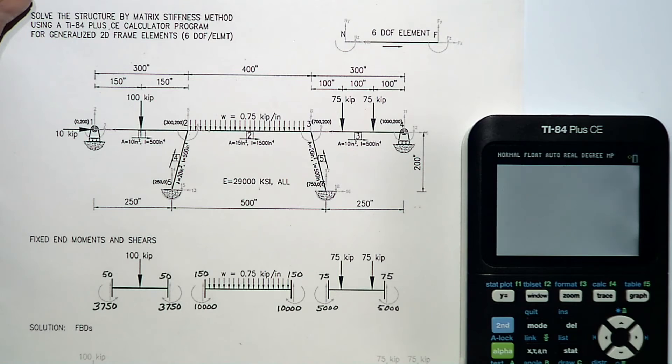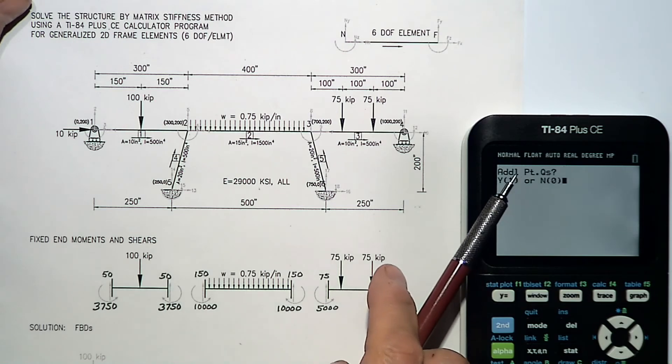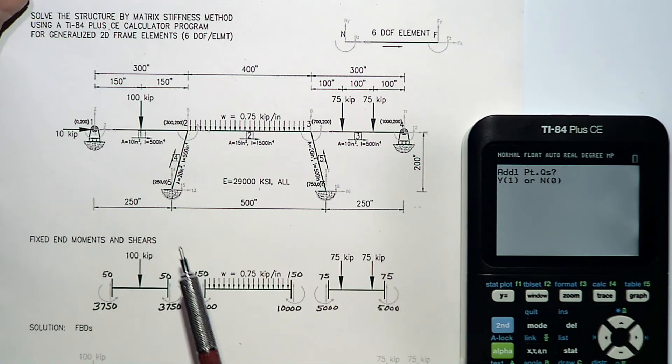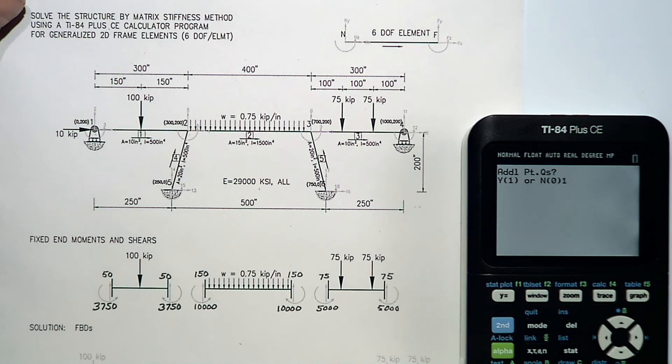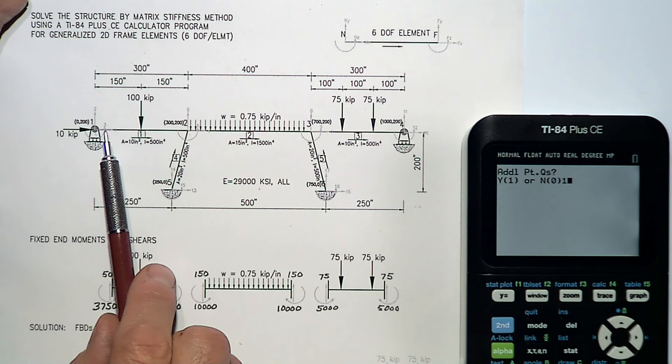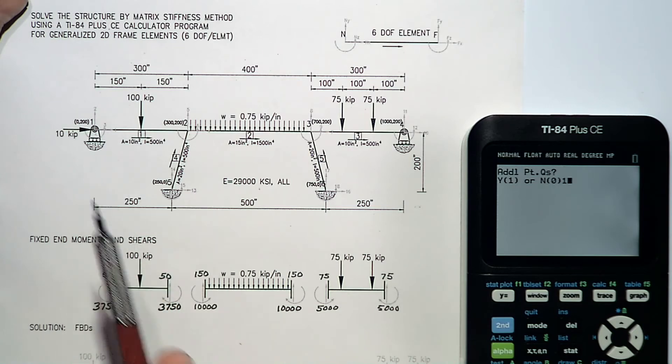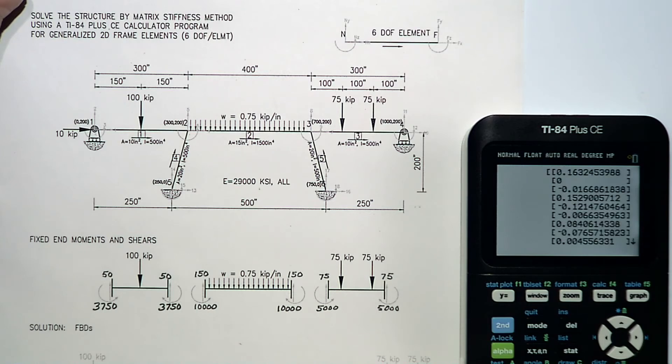Then I have a partitioned matrix. Now I look for additional queues or forces applied at nodes as opposed to fixed end effects. I'm going to answer one for yes because there is a ten kip force in the direction of degree of freedom one. So I'll say yes, degree of freedom one has an applied force of ten kips. This, I'll answer no to. There are no additional queues.